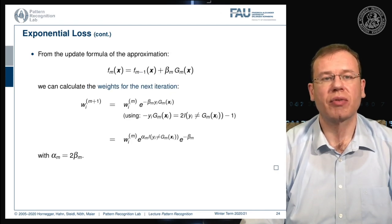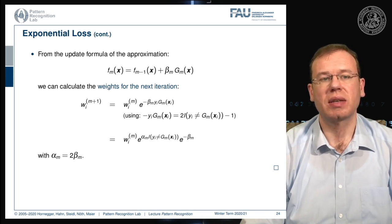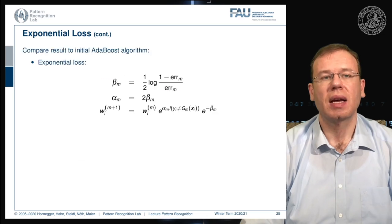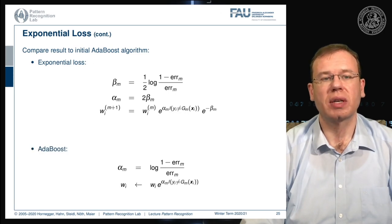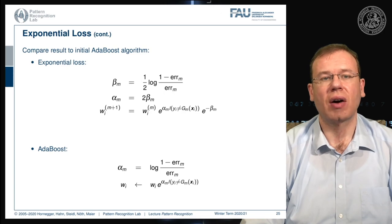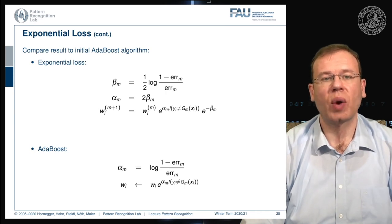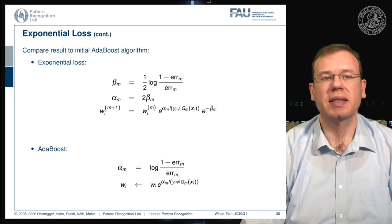From the update formula of the approximation, we can calculate the weights for the next iteration. We can use this identity to derive the new weight, and we see that alpha_m is going to be two times beta_m. Comparing this result to the AdaBoost algorithm, the exponential loss yields solutions for beta_m, alpha_m, and the weights that match the AdaBoost formulas. The alpha and weight update in AdaBoost take a very similar form — so AdaBoost is essentially minimizing the exponential loss.